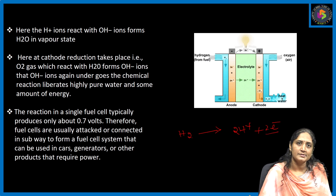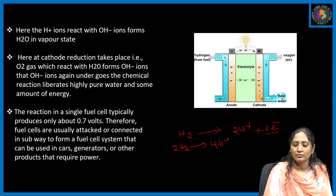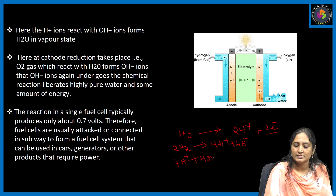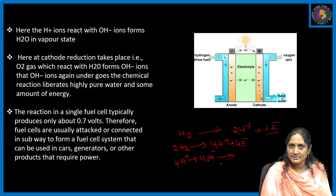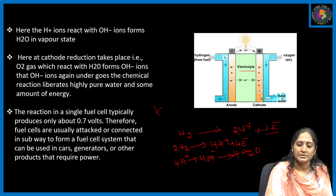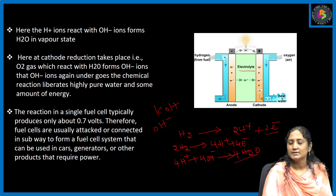Loss of electrons is oxidation. If you take two moles of H₂, it produces four H⁺ ions and four electrons. These H⁺ ions undergo a reaction with OH⁻ ions which are in the electrolyte solution, producing water molecules. The electrolyte is KOH, which produces OH⁻ ions. The H⁺ ions liberated at the anode and the OH⁻ ions from the electrolyte react to produce H₂O, and this releases some amount of energy.